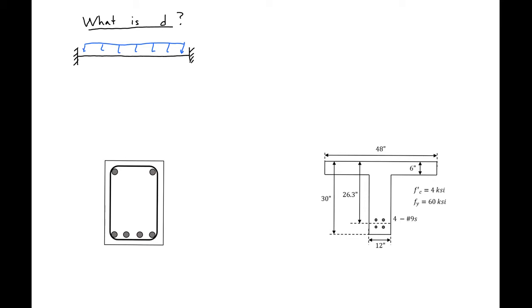First we're going to look at what is D. To do this we'll use a fixed-fixed beam example. For a fixed-fixed beam, our moment diagram will have a negative moment at the end, a positive moment at mid-span, and a negative moment at the other end. Our D is going to be dependent on what section we look at along the beam.